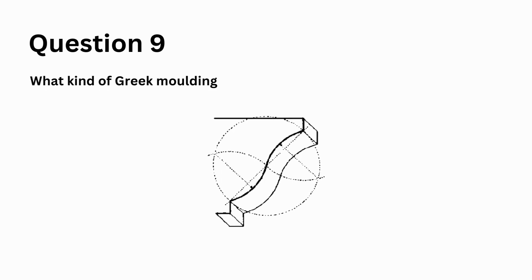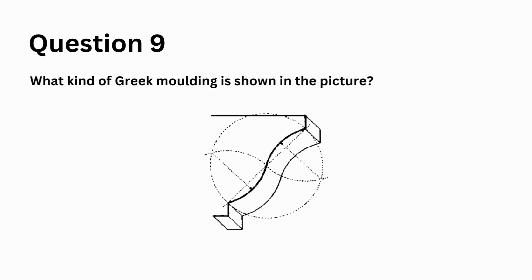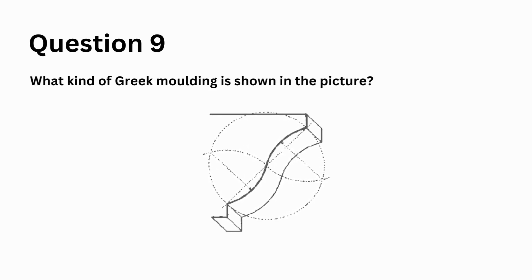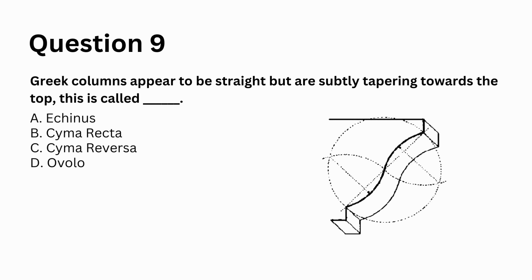What kind of Greek molding is shown in the picture? a. Echinus, b. Cymerecta, c. Cymereversa, d. Ovalo. Answer: b. Cymerecta.